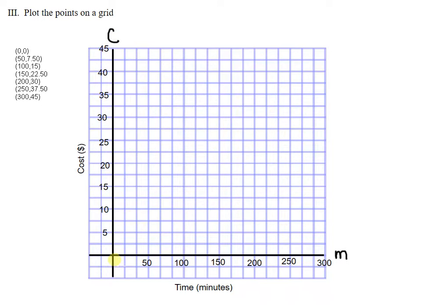So again, how we know it's direct variation is this point is always going to be part of direct variation, the 0 comma 0.